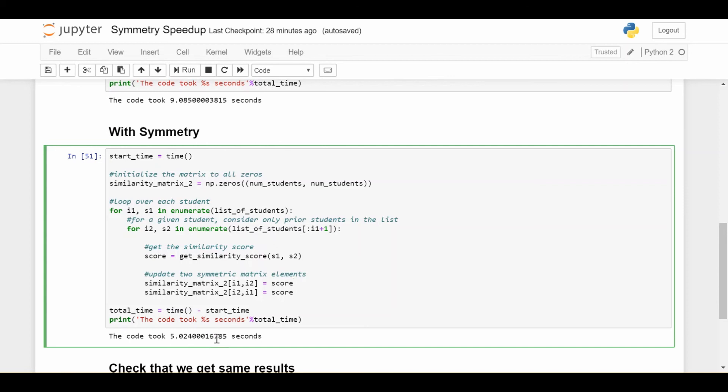So we probably could get this down even further. But this is just an explanation about why it's not exactly half because we have to do the diagonal in this case.